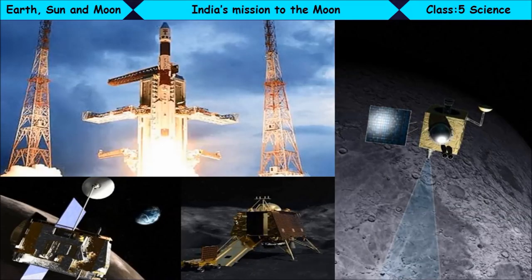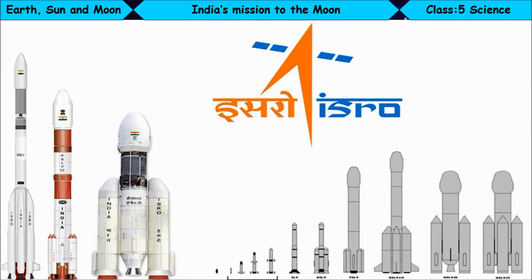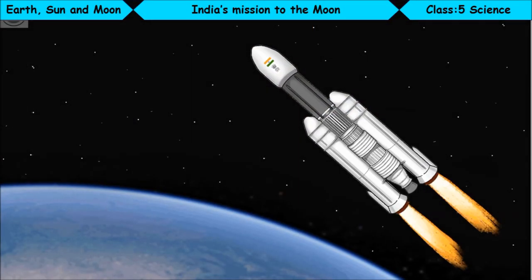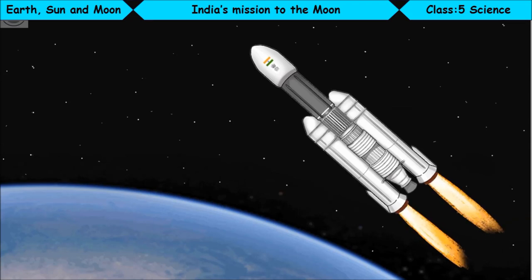India's mission to the Moon. The Chandrayaan-1 mission is India's first spacecraft to be sent to the Moon. It was launched by India's National Space Agency, the Indian Space Research Organization, ISRO, on 22 October 2008 from the Satish Dhawan Space Center, Sriharikota, Andhra Pradesh.